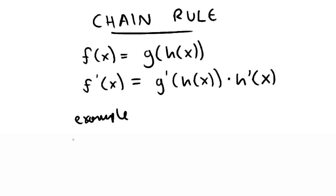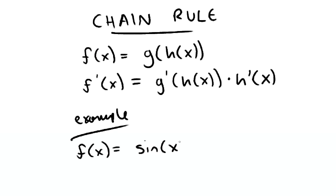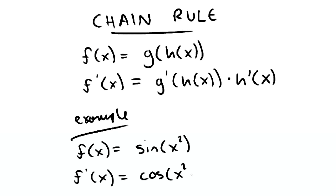For example, if f of x is equal to sine of x squared, then the derivative of the function of x is equal to the derivative of the outside function, cosine of x squared, multiplied by the derivative of the inside function, 2x.